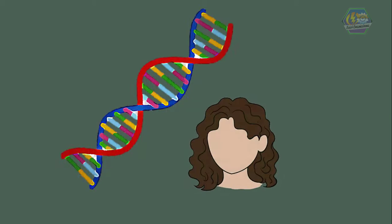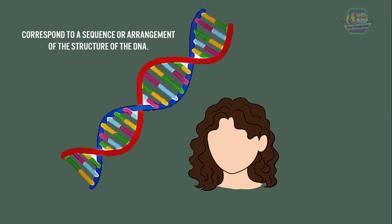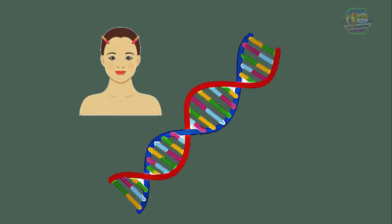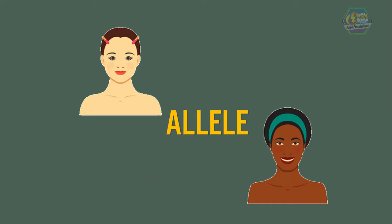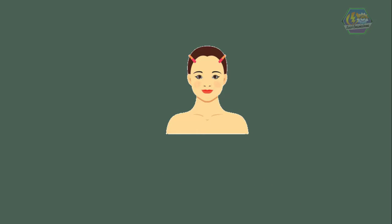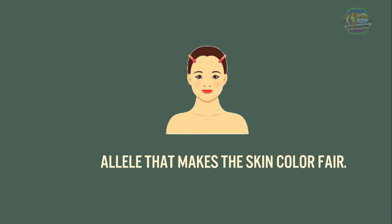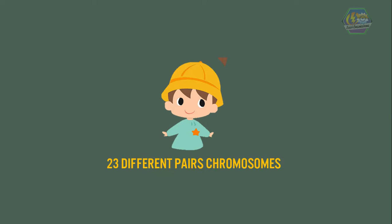This is similar to our genes: the color of your hair could correspond to a specific sequence or arrangement of the DNA structure. This specific sequence of a gene — like the sequence that gives you fair skin color versus the sequence that gives you brown skin color — is called an allele. People with fair skin color have the allele that makes skin color fair.